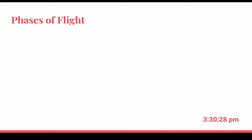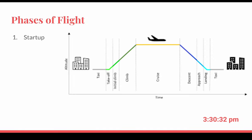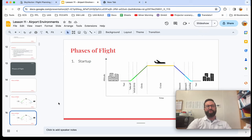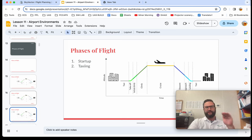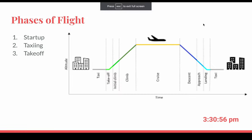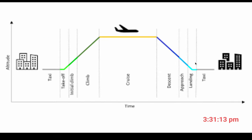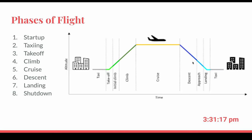Let's start off with phases of flight. They've broken flight into different parts: engine startup, when you're literally starting the engine and getting ready to take off; taxiing, moving around on the ground on the airport surface; takeoff; climbing; cruise; descent; landing; and then shutdown. Take a second and make sure you have all of those written down.